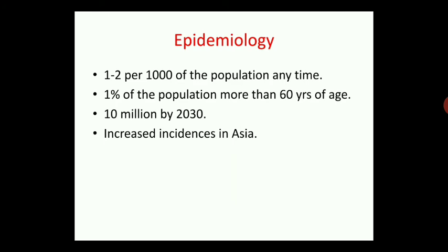While considering the epidemiology, generally one to two per thousand of the population can be affected at any time. We can consider one percent of the population over 60 years of age. About eight percent of people in that age group may be affected. It is predicted that almost by 2030 it may affect 10 million people around the globe, and increasing incidence can be seen in the Asian continent.